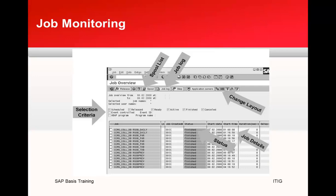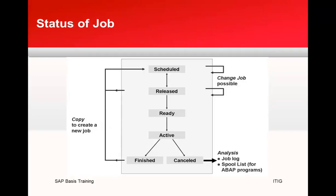Now let's look at the different statuses of a job. When you schedule a job it goes into 'scheduled' status. When it is released it goes into 'released' status. When it is ready to run it has 'ready' status — meaning the start condition of the released job has been fulfilled. 'Active' means the job is currently being executed and cannot be deleted or changed. If an active job doesn't seem to be running correctly, you can terminate it, analyze it in a background work process in debugging mode, and then release it again or terminate it.